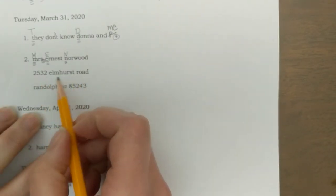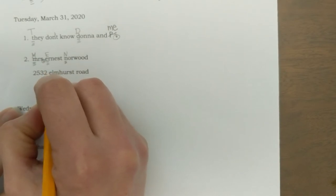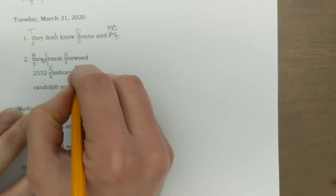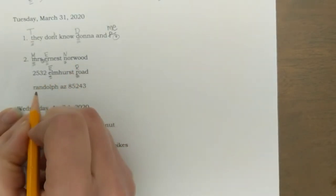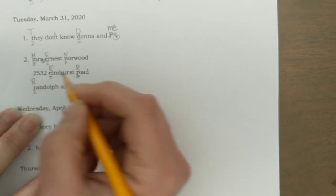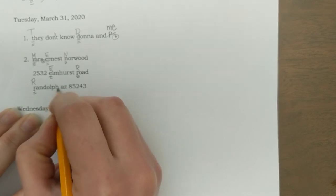On the second line, we have the street that she lives on. So Elmhurst and Road both need capital letters. On the third line, Randolph, that must be her city, needs a capital R. A comma in between the city and the state.